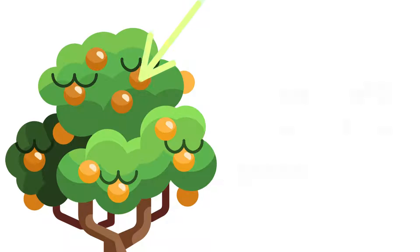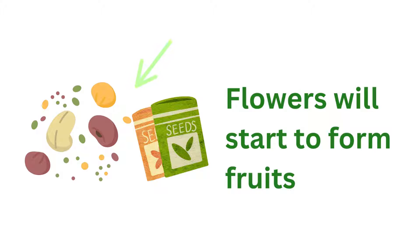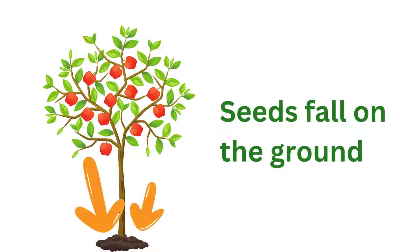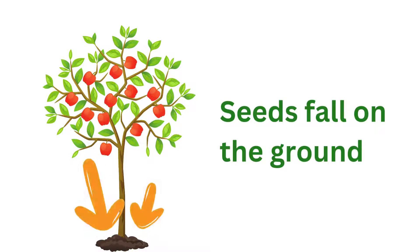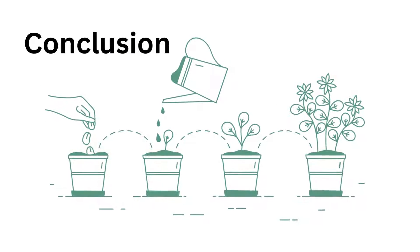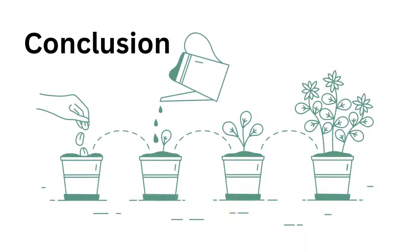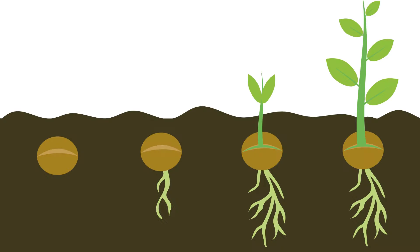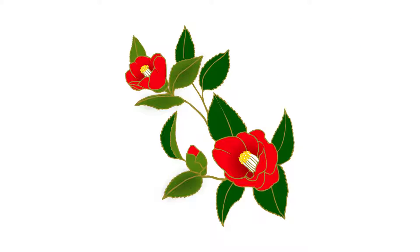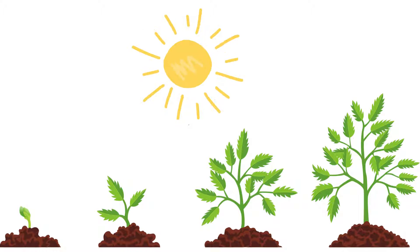The fruits will grow and mature until they are ready to be dispersed. This is the final stage of the life cycle, where the seeds will fall to the ground, or be carried away by animals or wind, and the cycle begins again. In conclusion, the life cycle of a flowering plant is a complex process that includes several stages, each of which plays a crucial role in the survival and reproduction of the plant. From the germination of a seed to the production of new seeds, the life cycle of a flowering plant is a beautiful and amazing process.